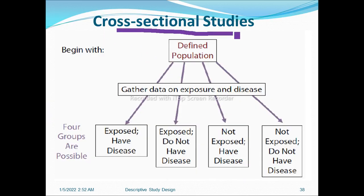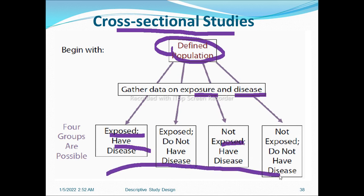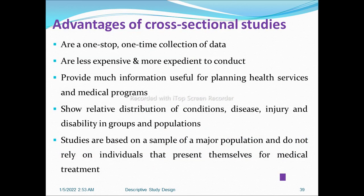In cross-sectional studies, we begin with a defined population and gather data on exposure and disease simultaneously. Four groups are possible: individuals who have been exposed and have disease; individuals who have been exposed but did not develop disease; individuals who have not been exposed but have disease; and individuals who have not been exposed and do not have disease. There is no follow-up on these four groups to arrive at these outcomes.